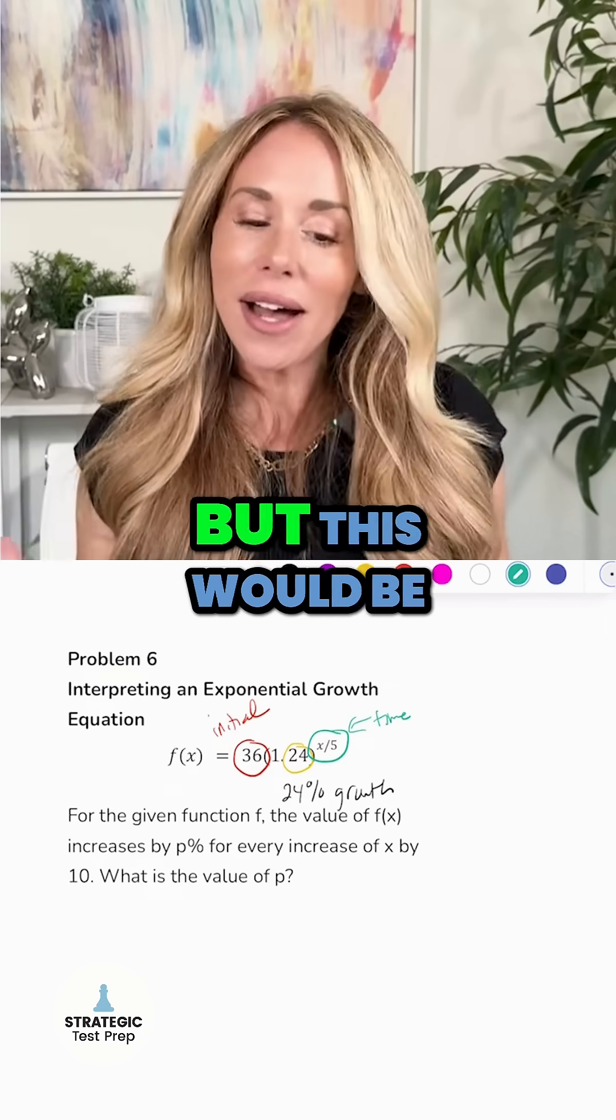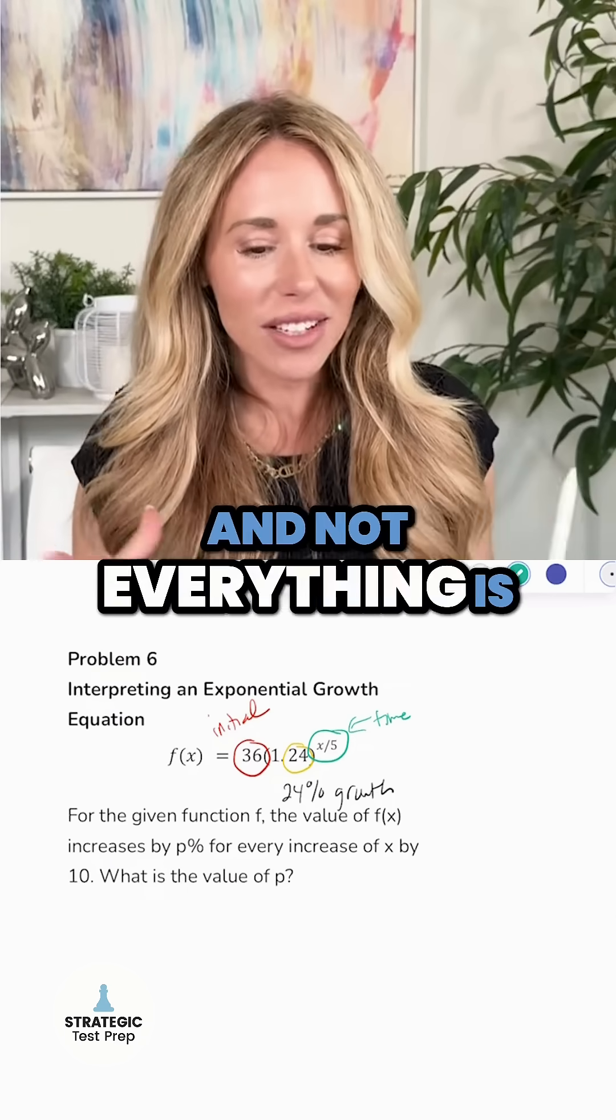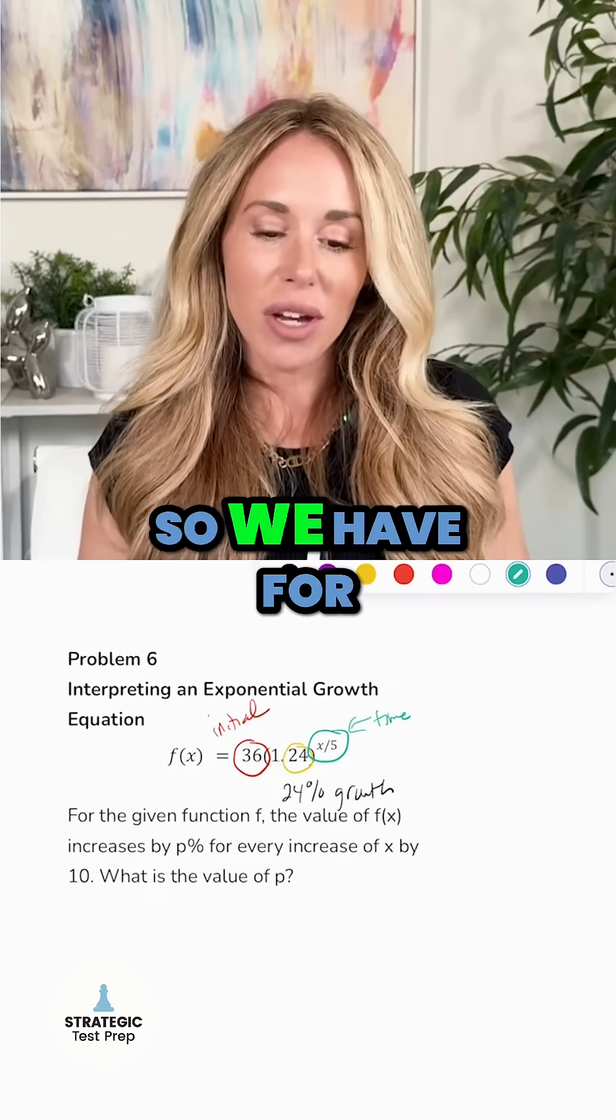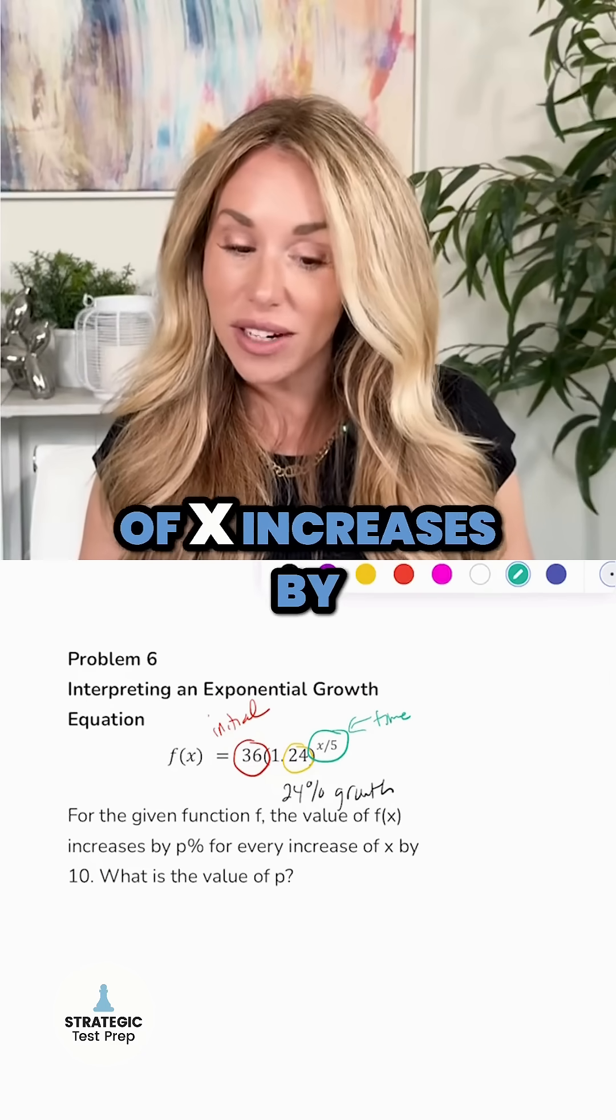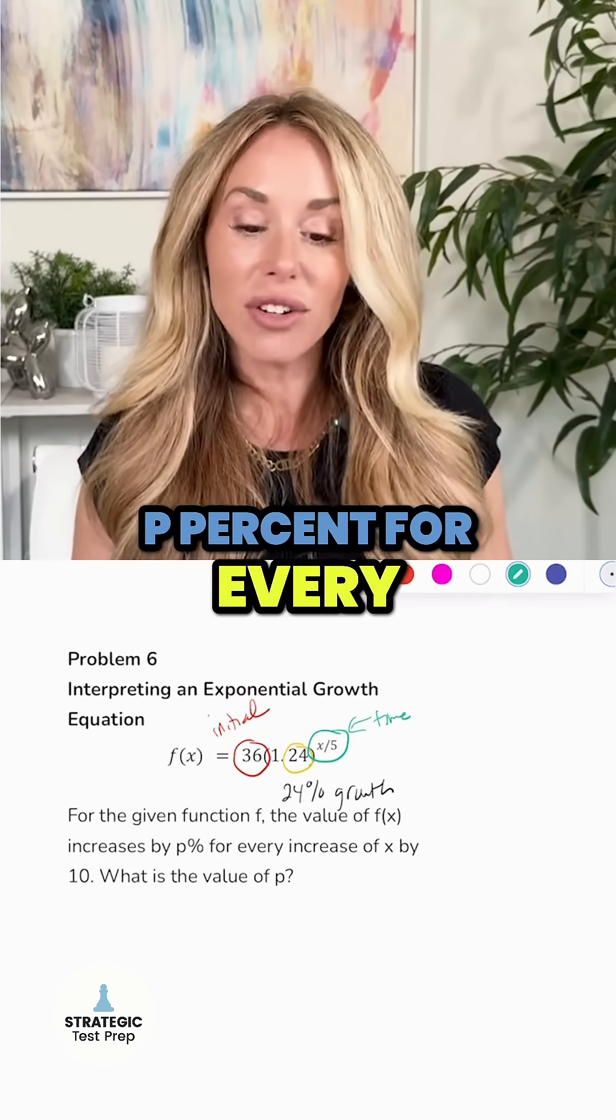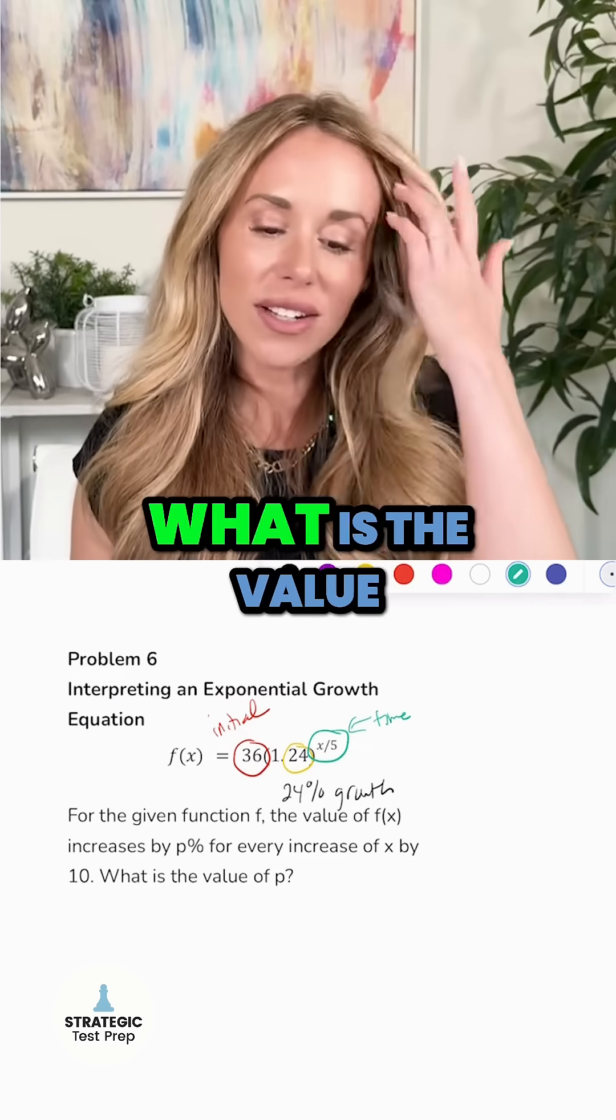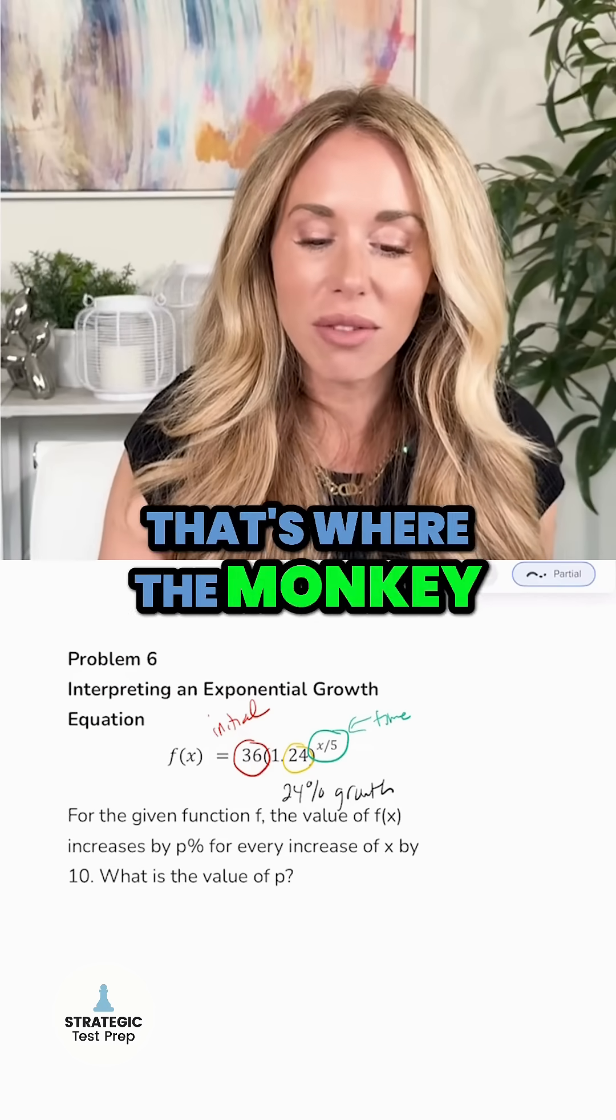But this would be a module 2 problem and not everything is going to meet the eye. So we have: for the given function f, the value of f(x) increases by p percent for every increase of x by 10. What is the value of p? That's where the monkey wrench is thrown in because they want to know the percentage increase when x increases by 10.